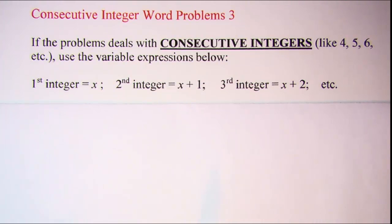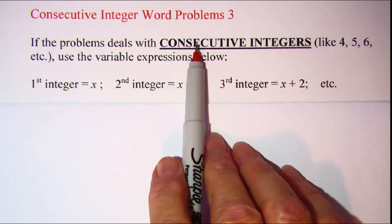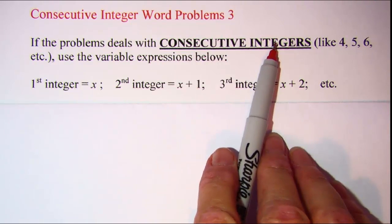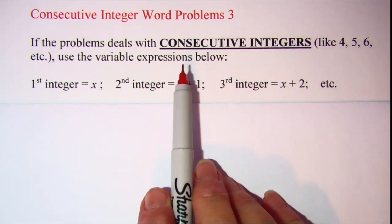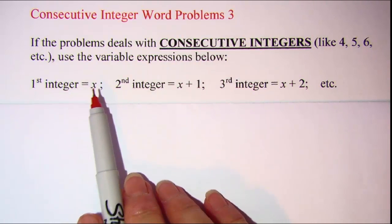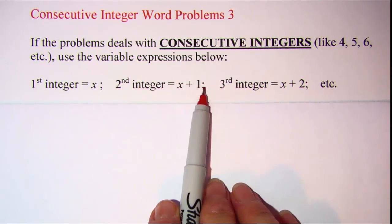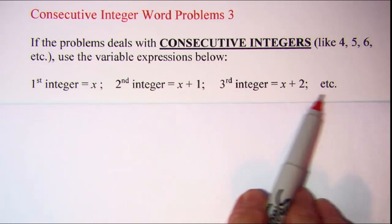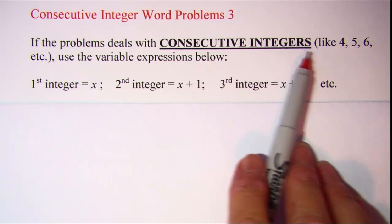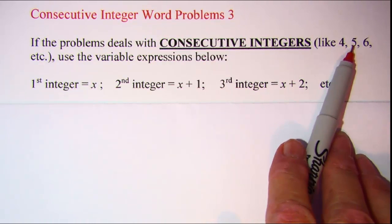If your word problem deals with just consecutive integers, for example 4, 5, 6, 7, 8, and so forth, then you'll use the variable expressions x, x plus 1, x plus 2, and so forth, because you're just going to want to add 1 to each number to get to the next one.